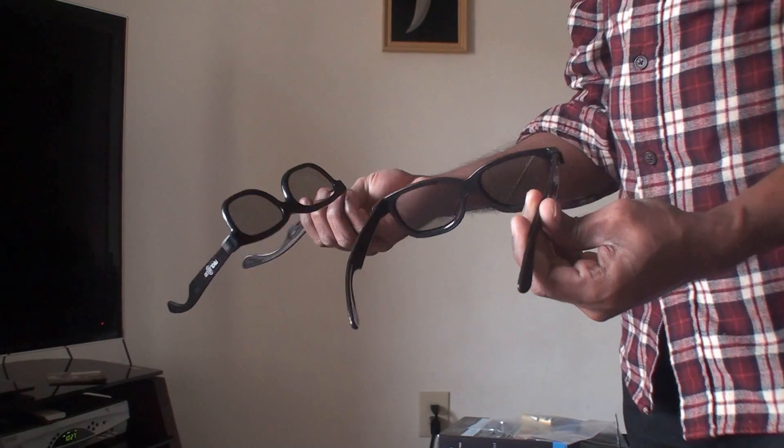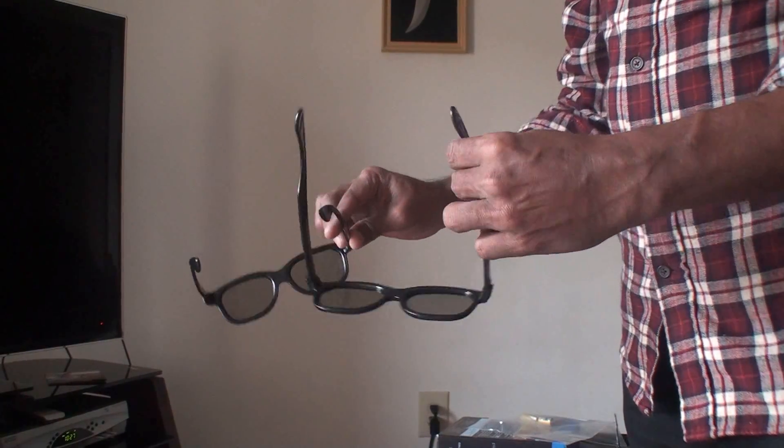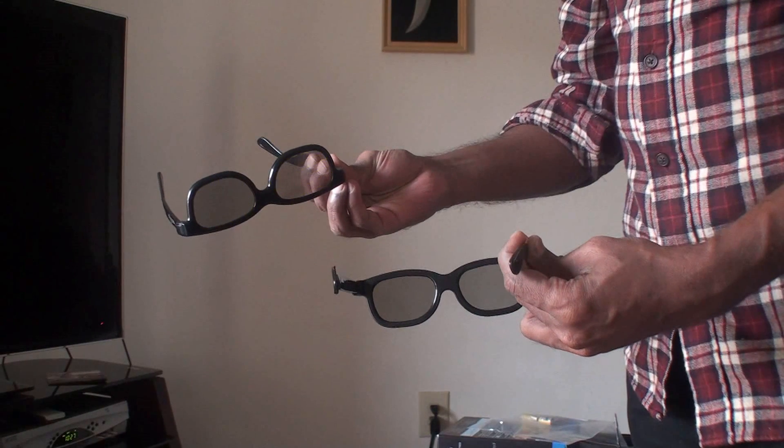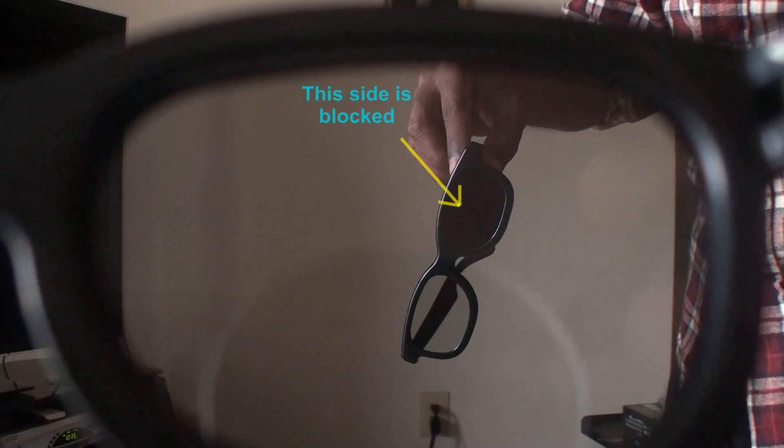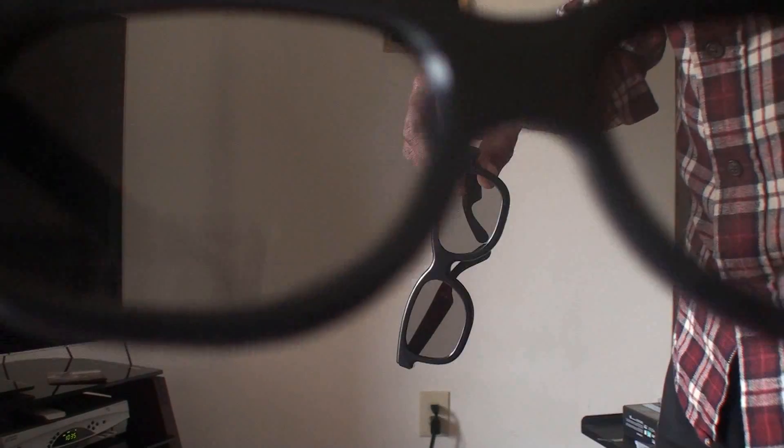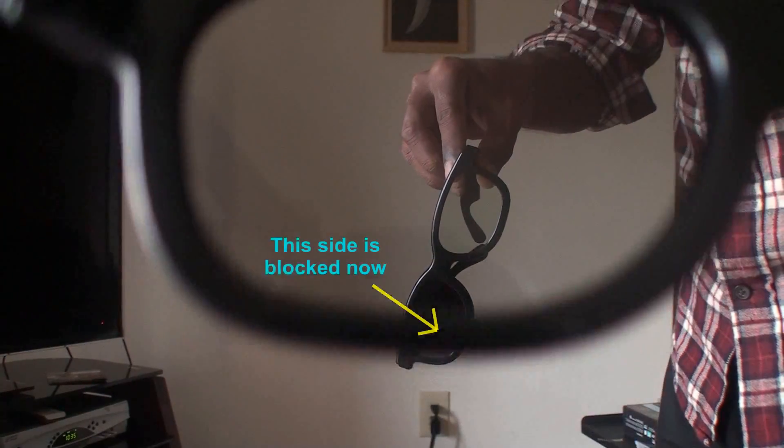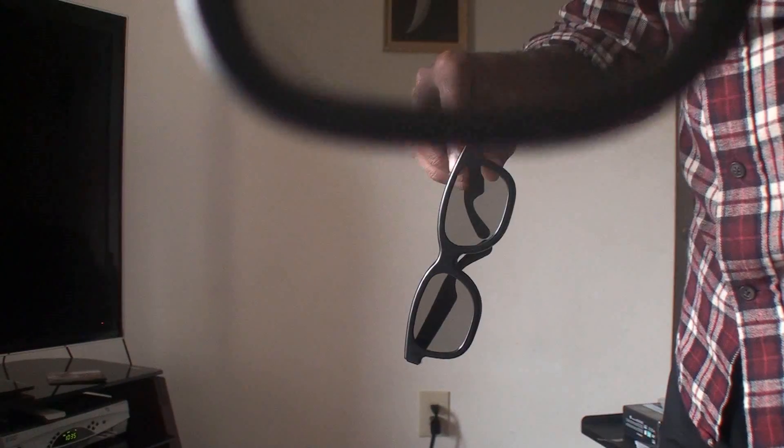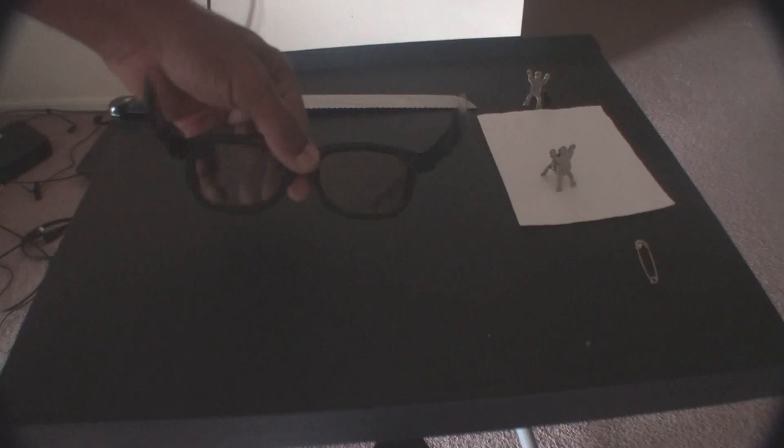The polarized 3D glasses have two different polarizations on each side. One side has horizontal polarization and the other side has vertical polarization. This test blocks the opposite side lights because both have different polarization.